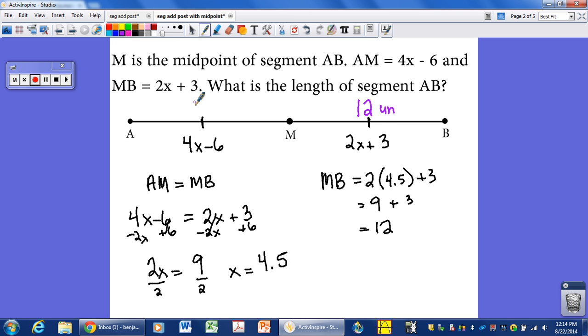And AM, since it's congruent or the same length as, is also 12 units long. So that must mean that AB is going to be 24 units long. Because it is the sum of the other two units. Just like the segment addition postulate says. 12 plus 12 equals 24. Segment addition postulate with a midpoint.